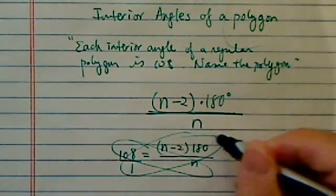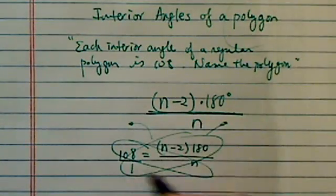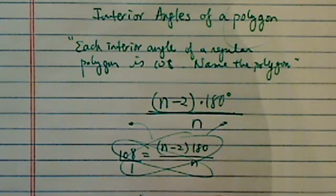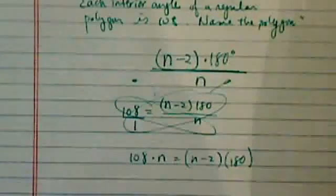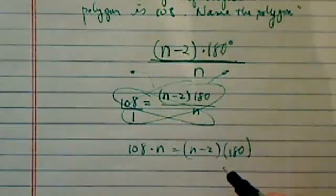Whenever you have a fraction here, what I tell my students is draw a butterfly. So basically, cross-multiply: 108n is equal to (n-2) times 180, basically times 1. This is how you get out of the fraction.